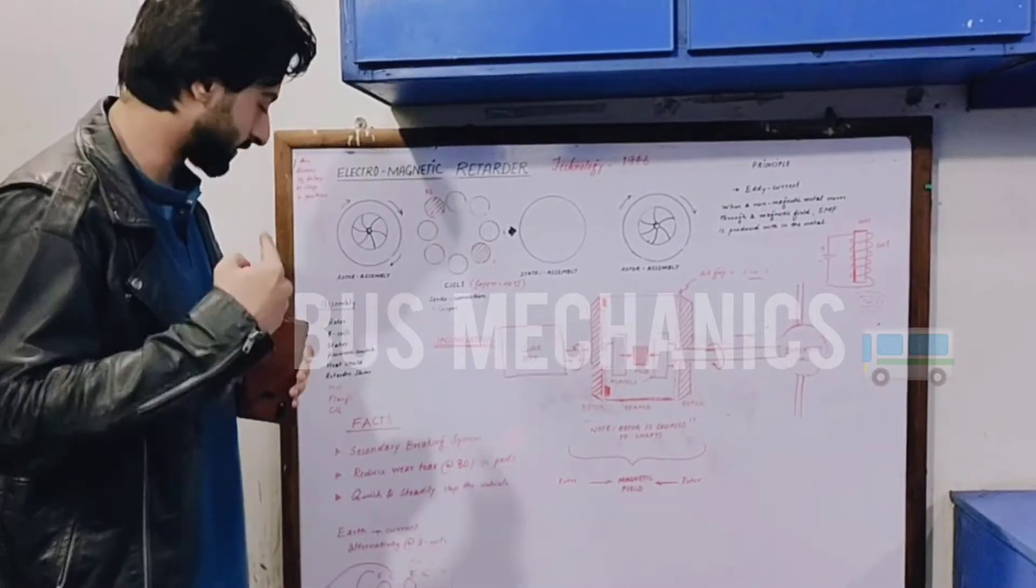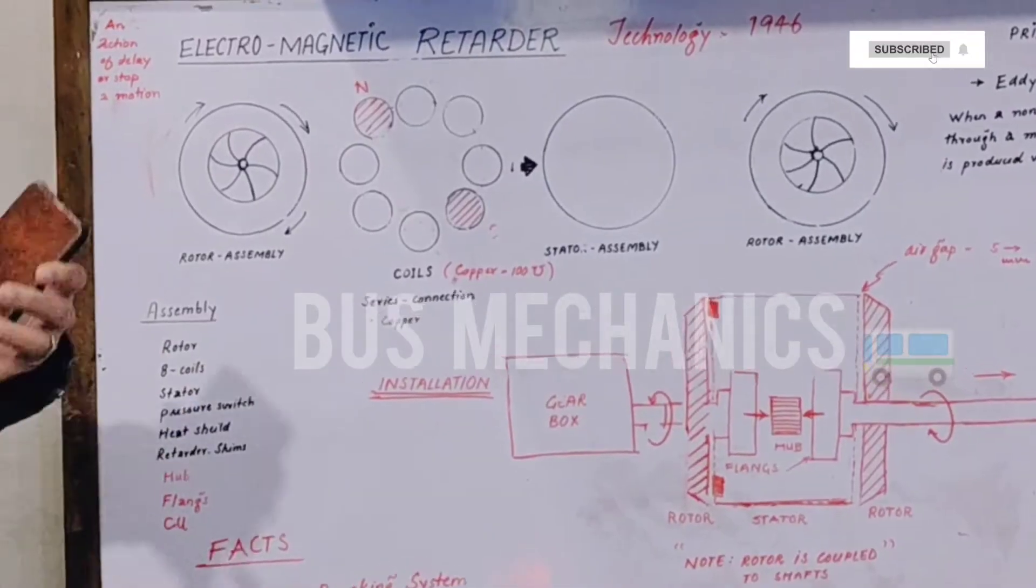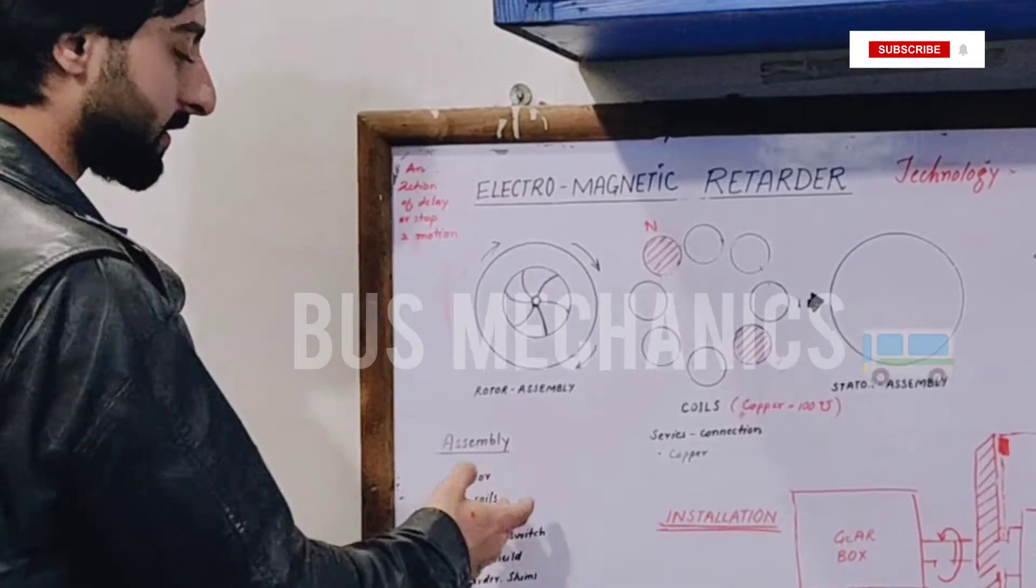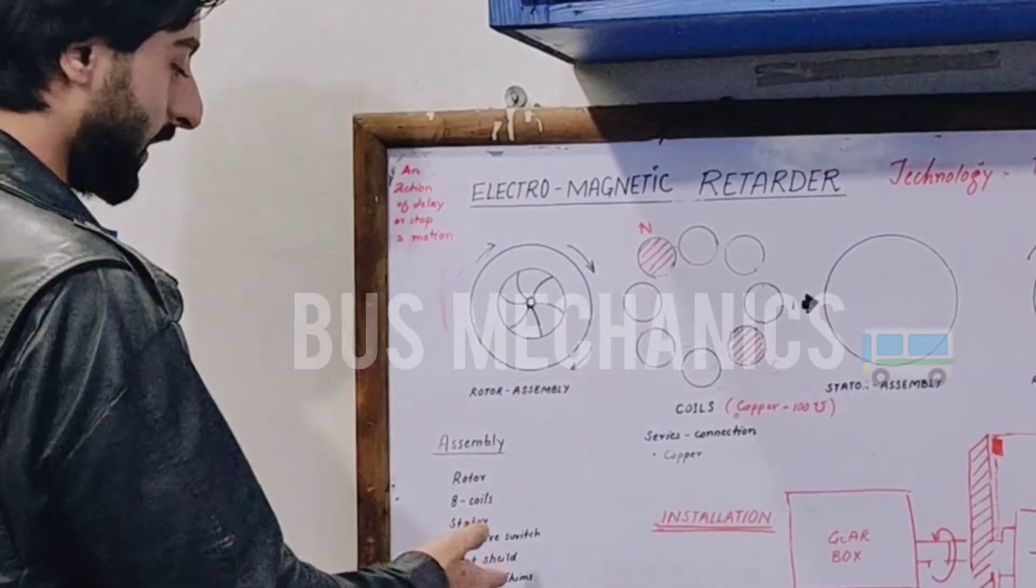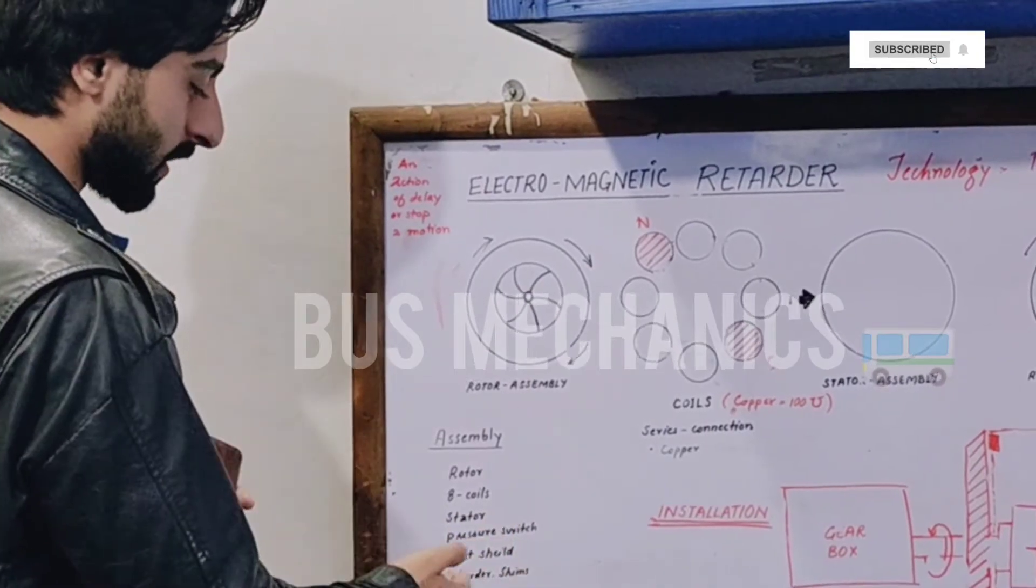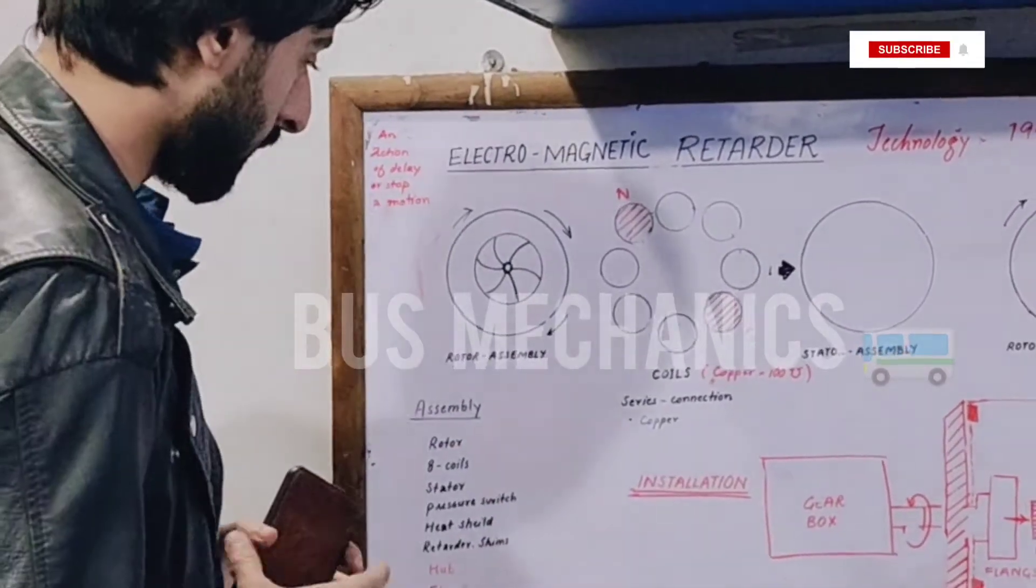There are eight coils which produce the magnetic field. We have the stator, the special part of retarder, pressure switches used to operate it, heat shield, retarder shims, hub, flank, and control unit.